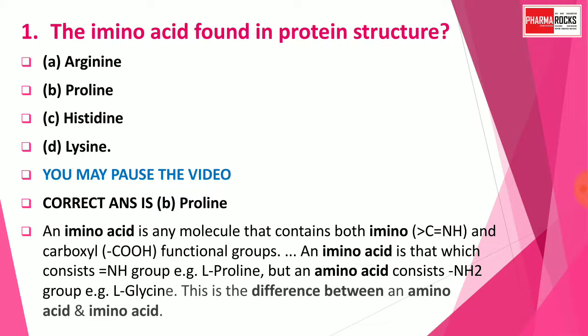An imino acid is a molecule that contains both imino and carboxyl functional groups. An imino acid consists of an NH group — example: L-Proline. But an amino acid consists of an NH2 group — example: L-Glycine. This is the difference between an amino acid and an imino acid.